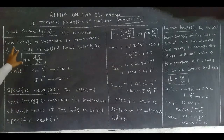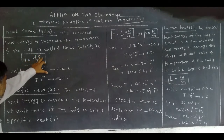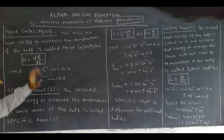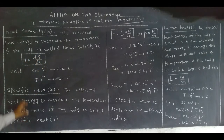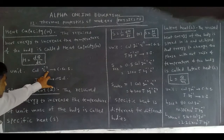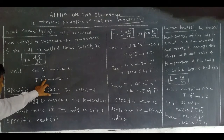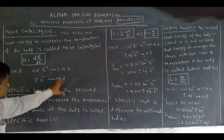What is the symbol for heat capacity? Capital H. How can we express it mathematically? dQ by dT. What is the unit? Calorie, centigrade inverse in CGS system; Joule, Kelvin inverse in SI system.